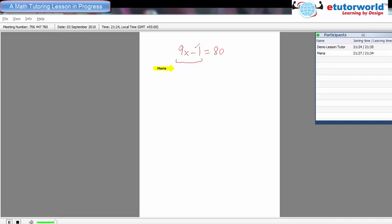Correct. So to undo that we add 1 to both sides. Right? Right. So make sure whatever you are doing on the left side you have to do on the right side also. Now you can simplify this. Minus 1 plus 1 will be 0. So 9x is equal to 81. Perfect.